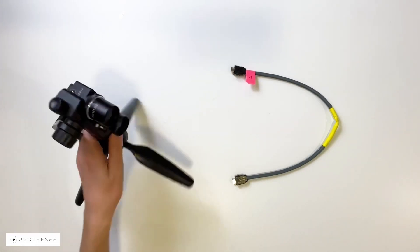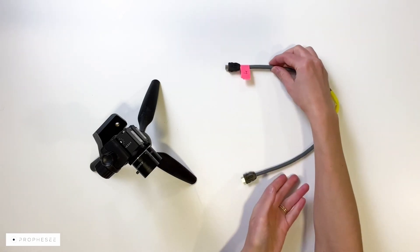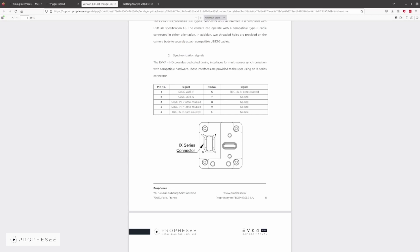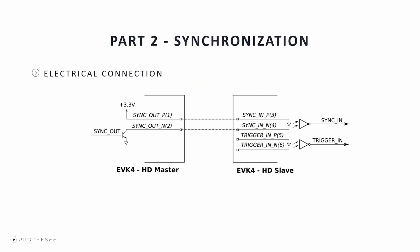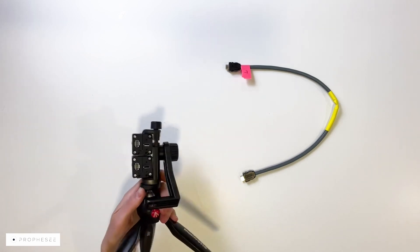In our setup we'll synchronize two EVK-4 cameras, for which we've prepared a custom synchronization cable. For EVK-4s we cannot use the same cable as for trigger-in, as the EVK-4 connector uses different pins for trigger-in and sync signals. Precisely, pins 1 and 2 are for sync-out, pins 3 and 4 for sync-in, and pins 5 and 6 for trigger-in. Both trigger-in and sync signals are optocoupled, and the sync-out signal is configured as an open collector. Here is an example of an electrical connection for synchronizing two EVK-4 cameras. To prepare the custom sync cable, we followed a similar procedure as in the first part of the video, but in the last step we connect the sync-out signal from the master camera to the sync-in interface of the slave camera. We also mark the end of the cable that goes into the master camera for easy identification. Now we'll plug the synchronization cable into both cameras, taking into account which end goes in the master and which goes into the slave.